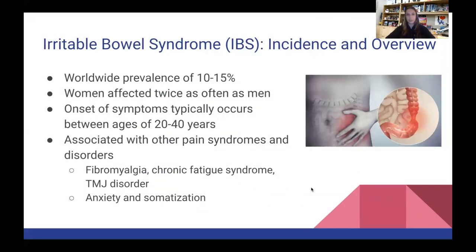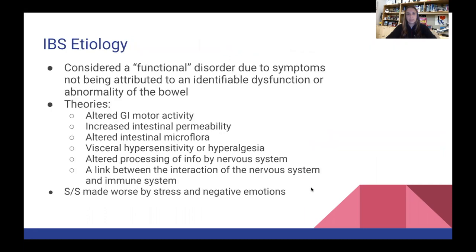Irritable bowel syndrome has a worldwide prevalence of 10 to 15%. Women are affected twice as often as men, and onset typically occurs between ages 20 and 40. It's associated with fibromyalgia, chronic fatigue syndrome, TMJ pain, anxiety, and somatization. Its etiology is complicated — it's considered a functional disorder because symptoms are not attributed to an identifiable dysfunction or abnormality of the bowel. Theories include altered GI motor activity, altered intestinal microflora, and a link between the nervous system and immune system interactions.